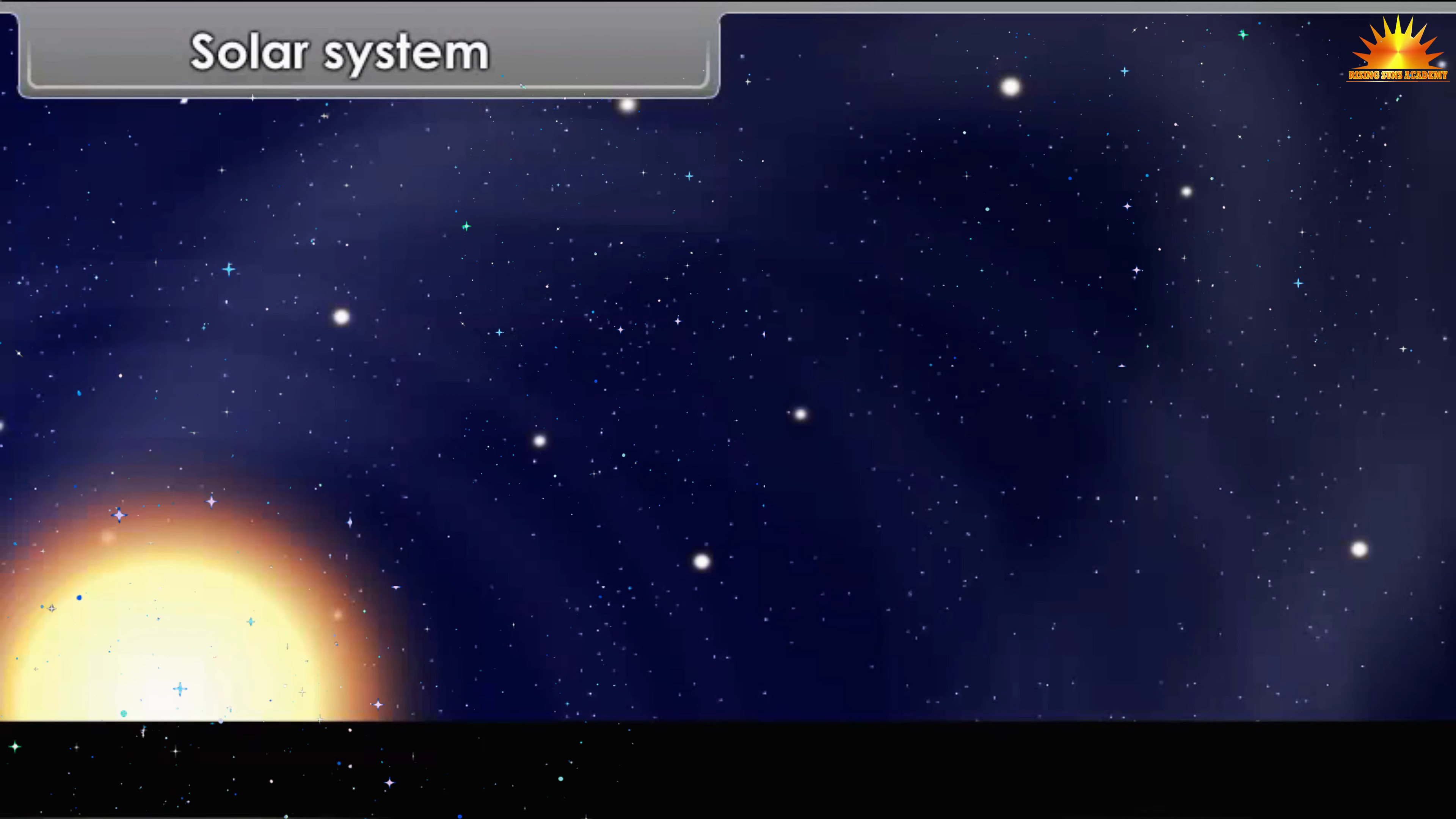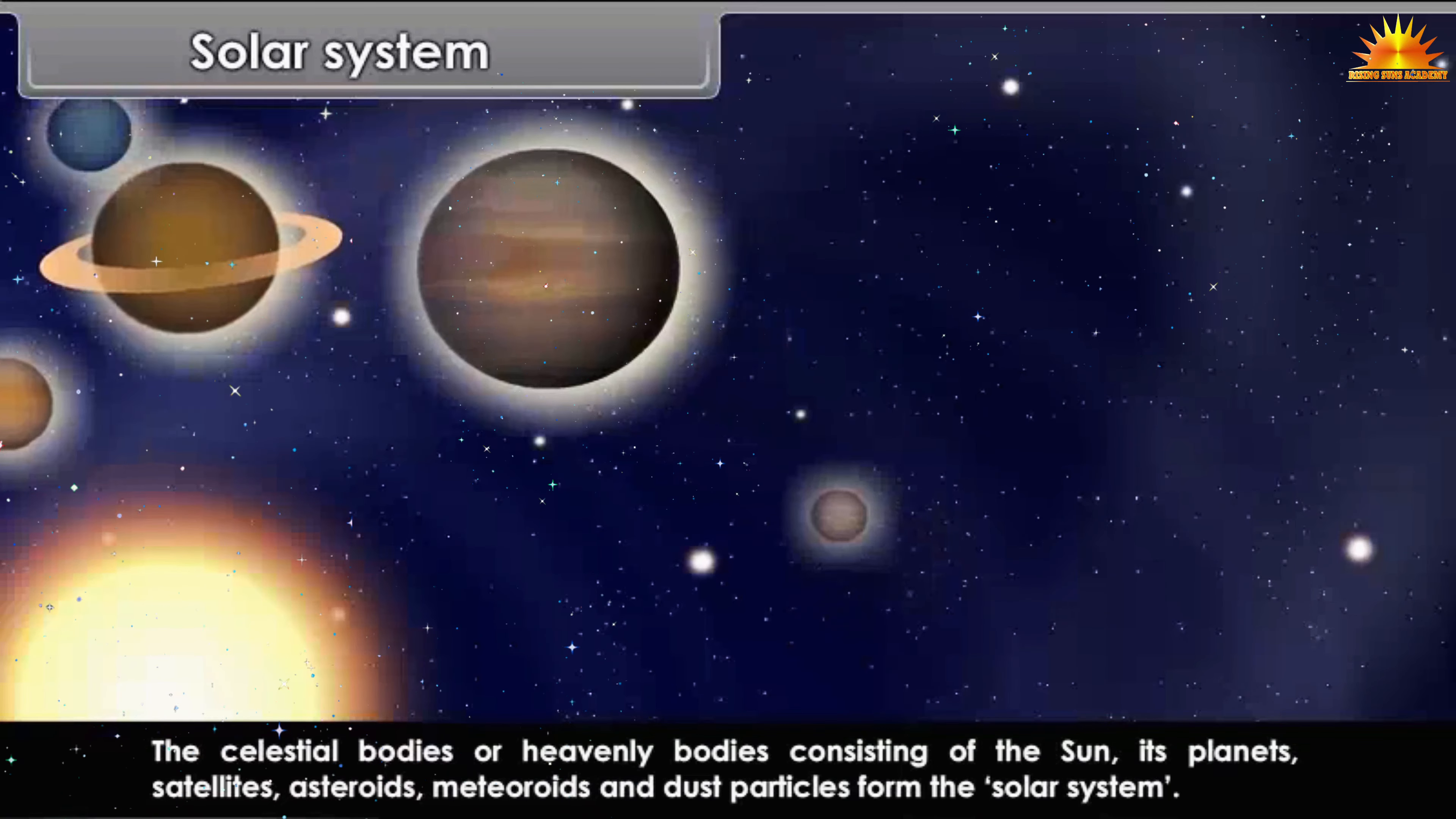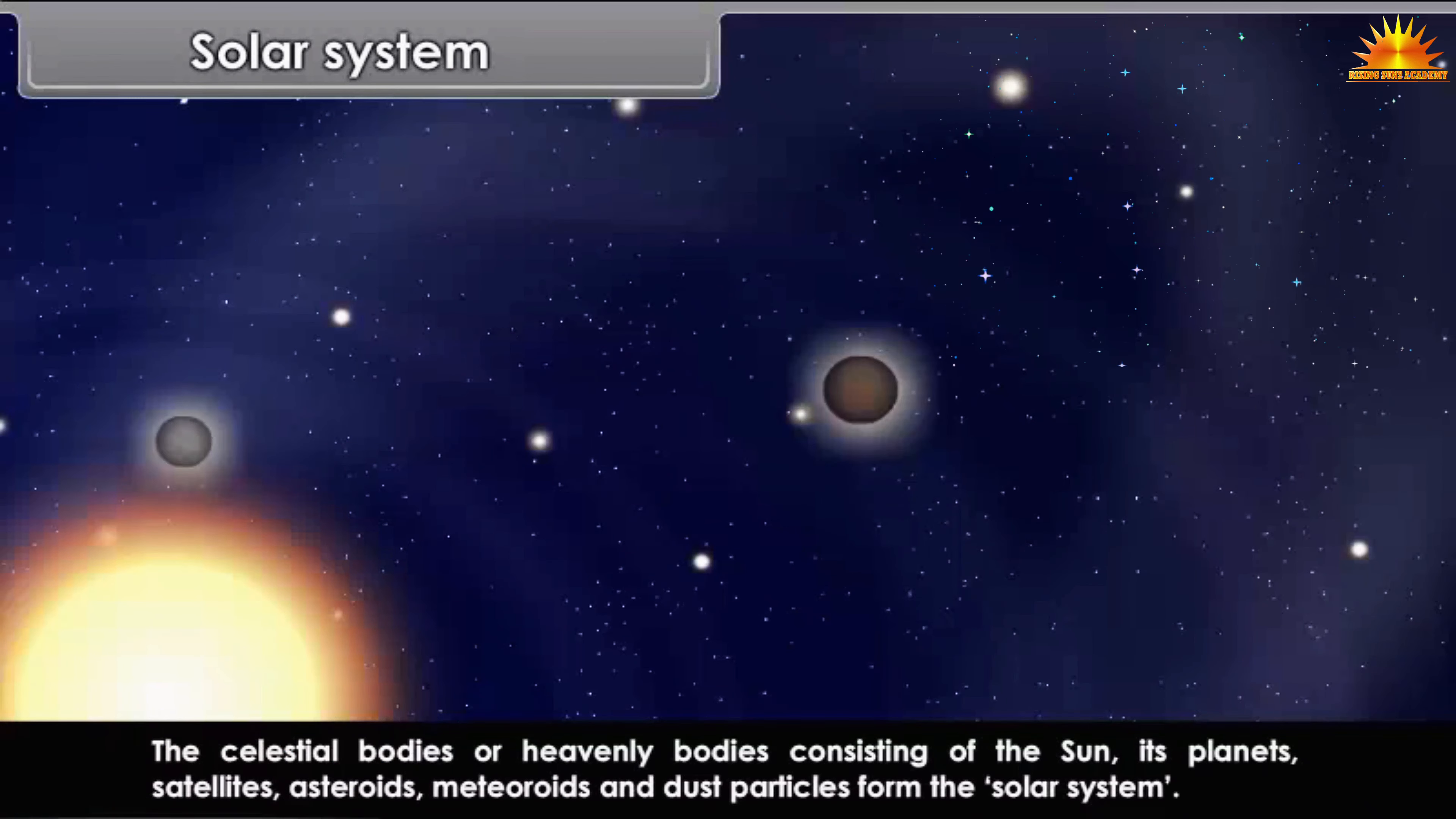The celestial bodies or heavenly bodies consisting of the sun, its planets, satellites, asteroids, meteoroids and dust particles form the solar system.